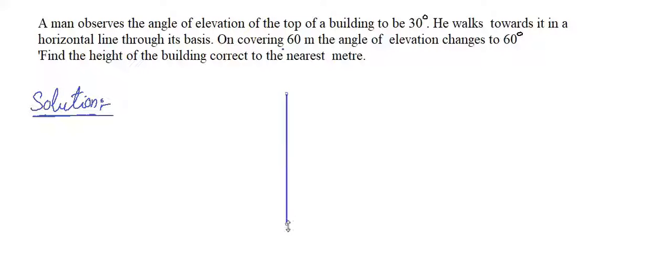He walks towards it in a horizontal line through its base. On covering 60 meters, the angle of elevation changes to 60 degrees. So which means he walks 60 meters towards the building. Let's draw the triangle diagram first.